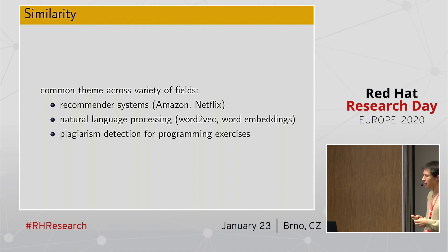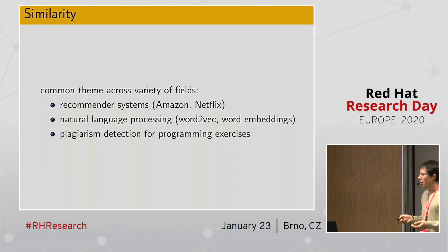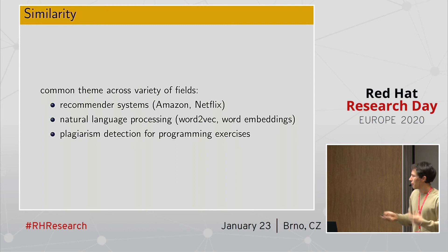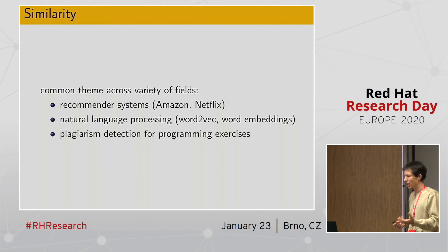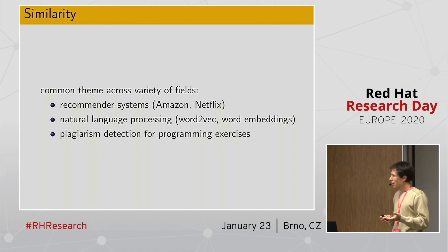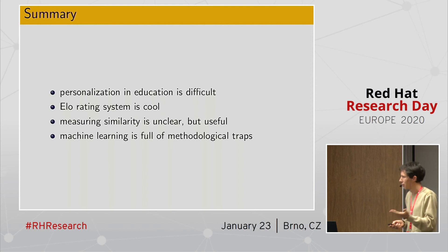I wanted to highlight similarity because it's relevant in many different fields. In recommender systems, like when Amazon recommends books or Netflix recommends movies, this is often based on some notion of similarity. In natural language processing, word embeddings are popular and useful for many tasks, also trying to capture similarity between words. In programming, plagiarism detection — detecting cheating by students — is again based on some measure of code similarity. For example, thinking about Python libraries: what does it mean that two Python libraries are similar? How could we measure it, and can that be useful for something?